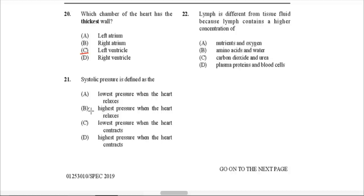Question 21: Systolic pressure is defined as what? Systolic pressure is the highest pressure in the heart when it is contracting. When the heart muscle contracts, that is when the pressure is going to be the highest. So that would be D. The opposite is diastolic pressure — when the pressure is lower as the heart is relaxing.